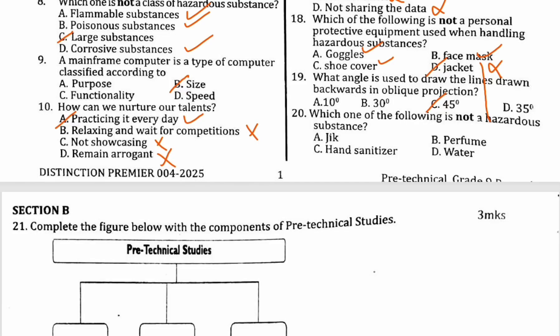Number twenty: which one of the following is not a hazardous substance? A hazardous substance is one likely to cause harm or discomfort. Bleach can cause discomfort, sanitizer can cause discomfort, perfume sometimes can cause discomfort. But water is not a hazardous substance. I'll continue with section B — thank you for watching.